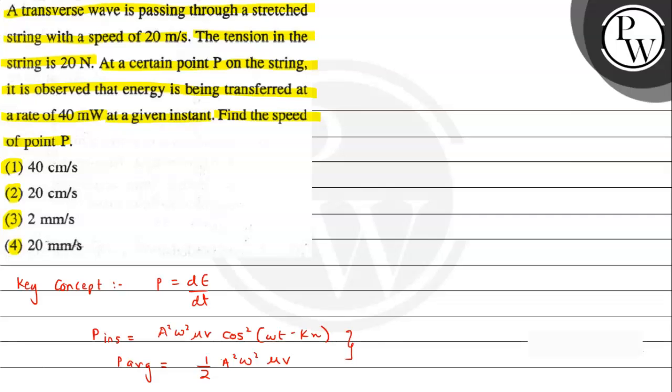Also, we need to remember when the wave runs in a string, its velocity is given by the expression v equals square root of T by mu, where T is the tension in the string. From this, we can solve the given question.